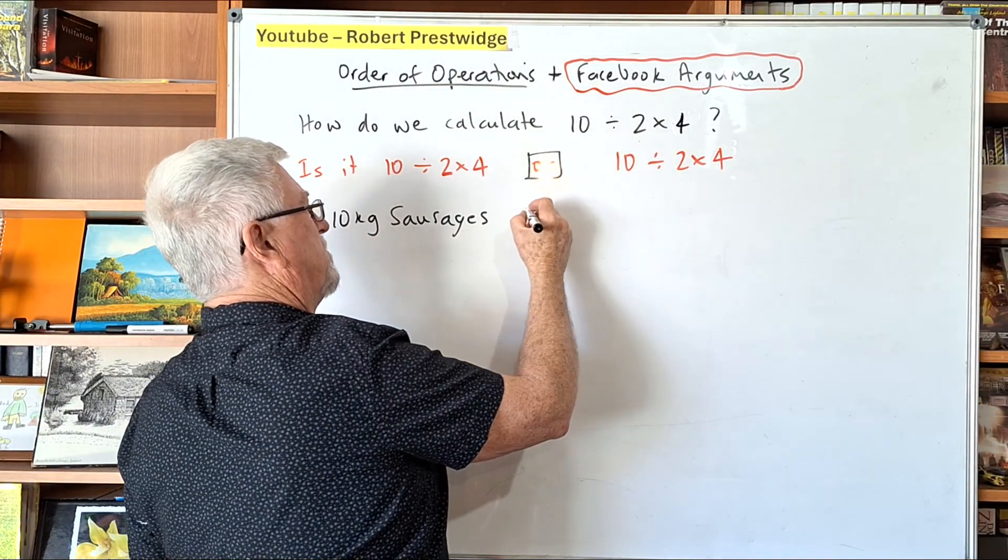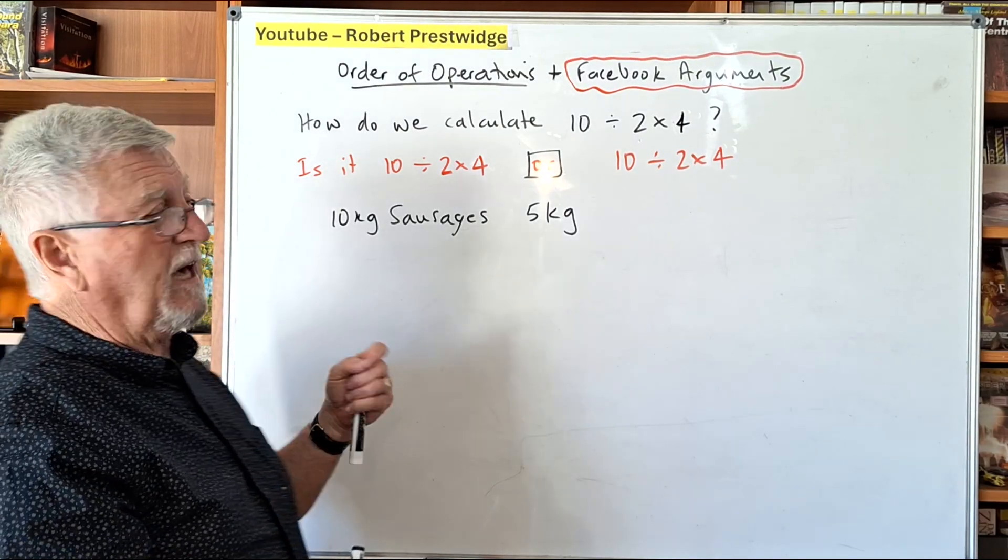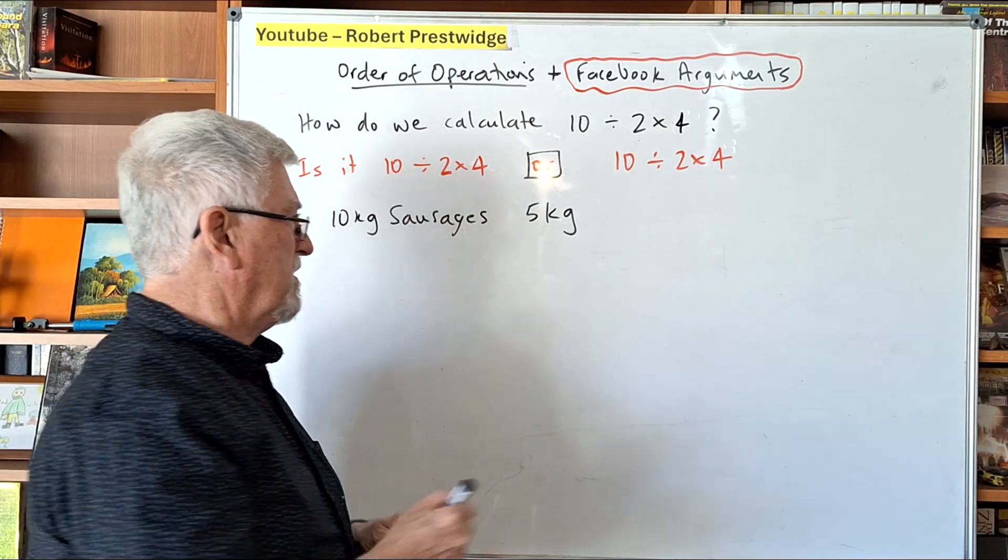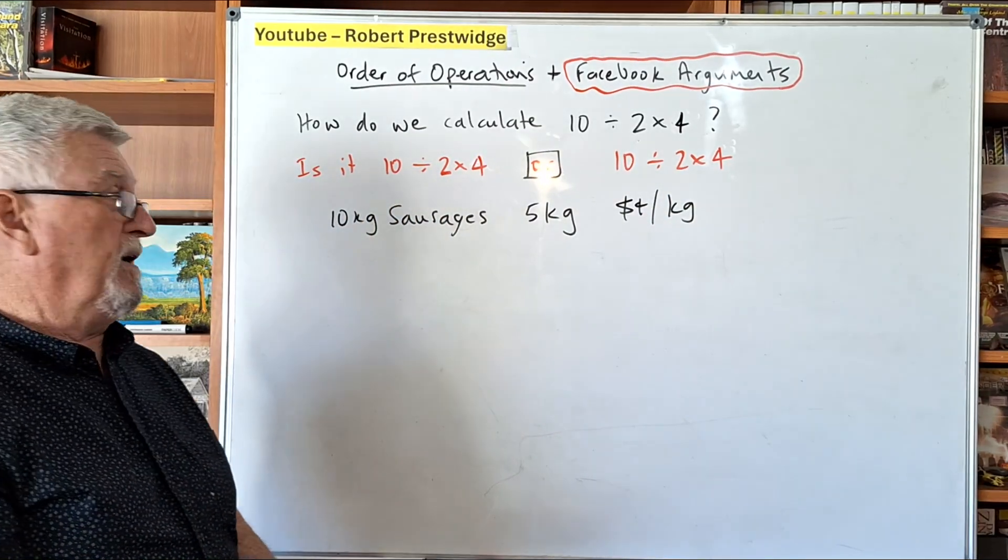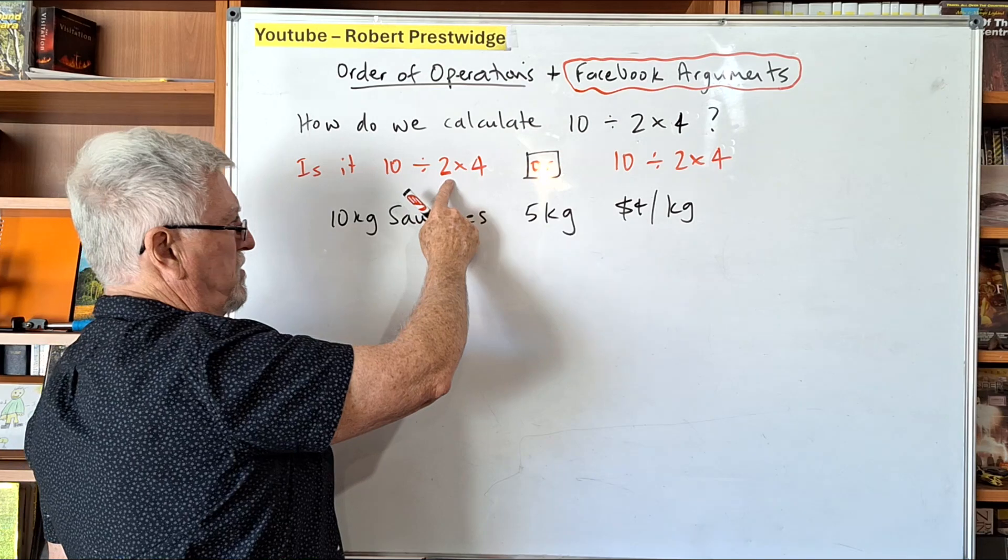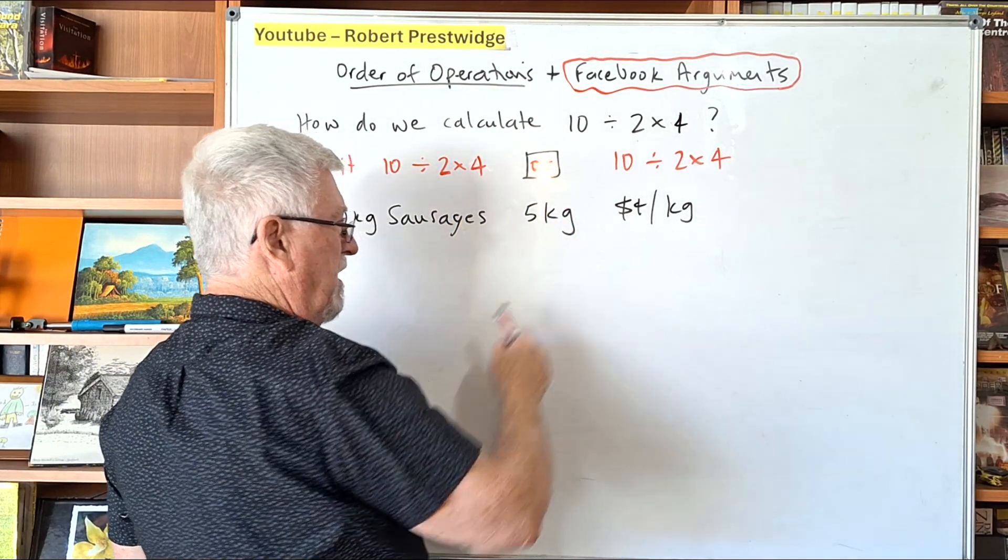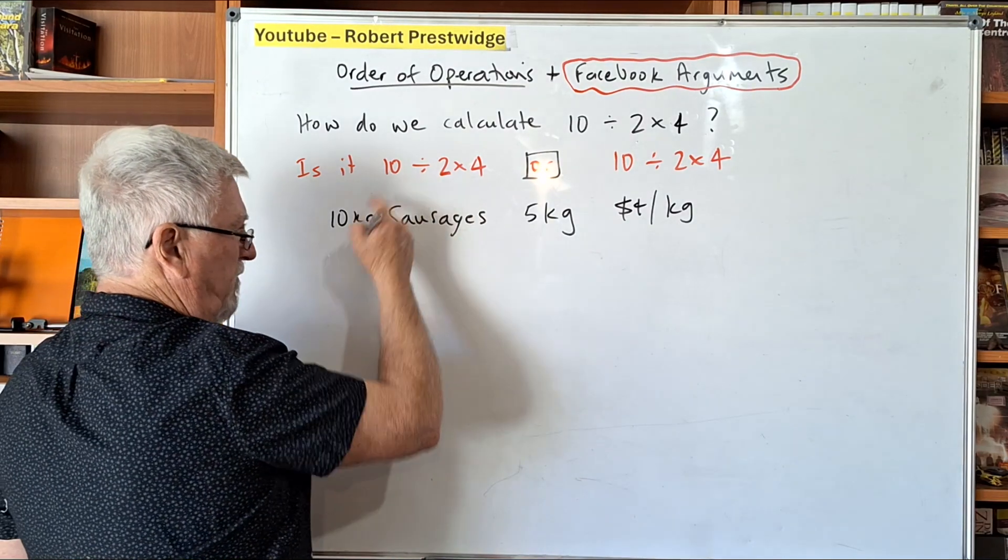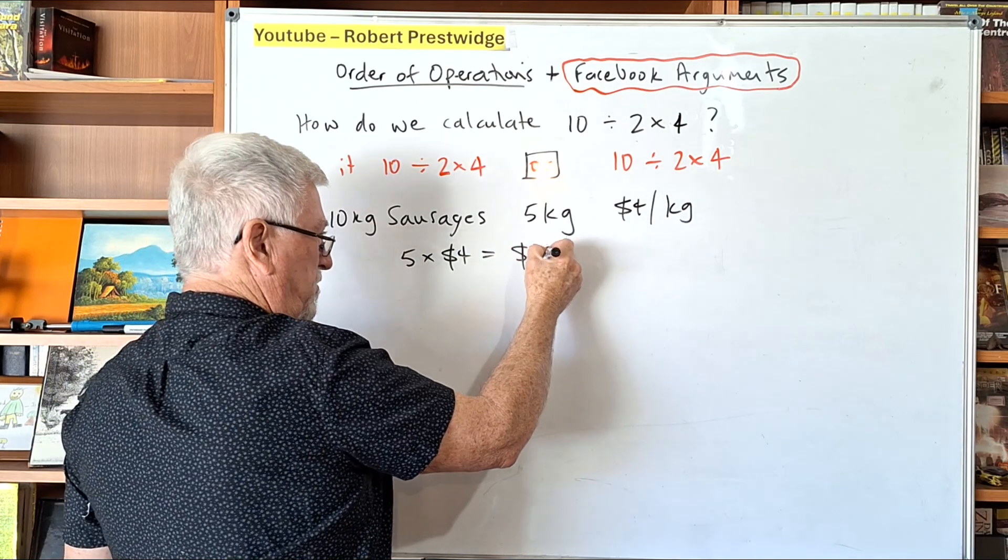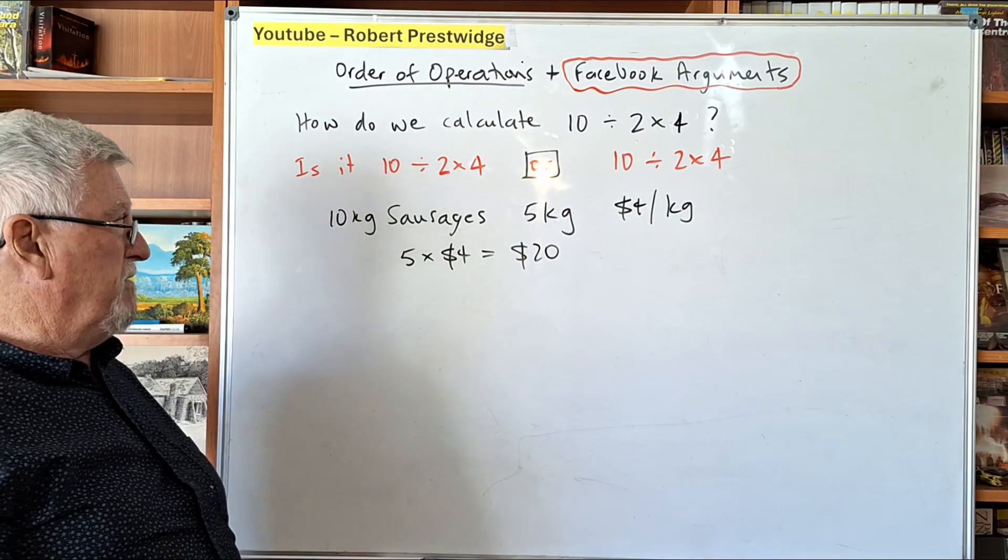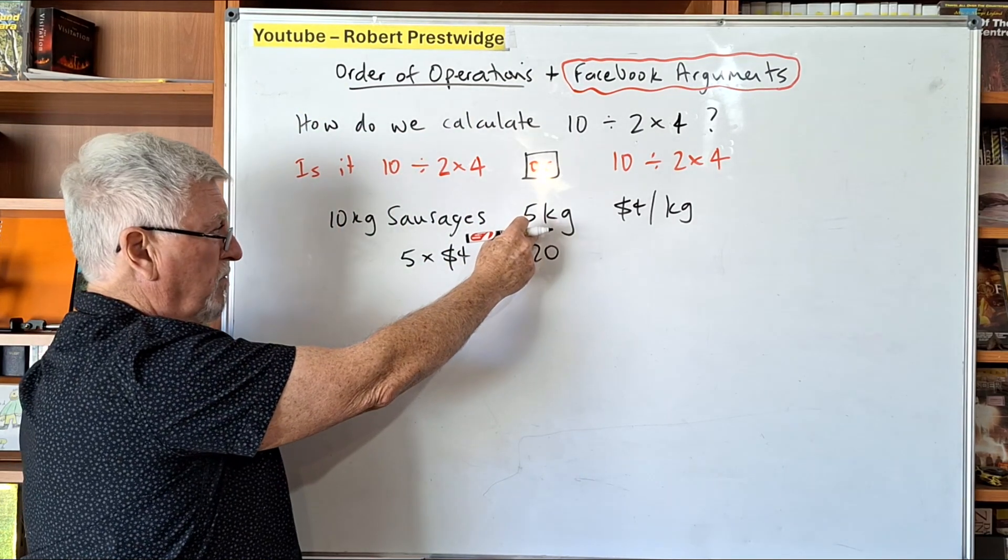Instead of 10 kilos of sausages, you'd be getting five kilograms of sausages. And then you'd say to the butcher, I really want five kilogram sausages. And he says, I'm going to charge $4 a kilogram. So what would your calculation be? You've got the 10 kilos of sausages, you divide it by two, so you end up with only five kilograms of sausages. And then you're paying $4 a kilo. So have a look at it again. 10 divided by two is five. Then you're going to multiply it by $4 a kilo and you end up with $20. Now that's obviously very reasonable. There's no doubt in most people's minds that the 10 divided by two is, you've already said to the butcher, I want that.